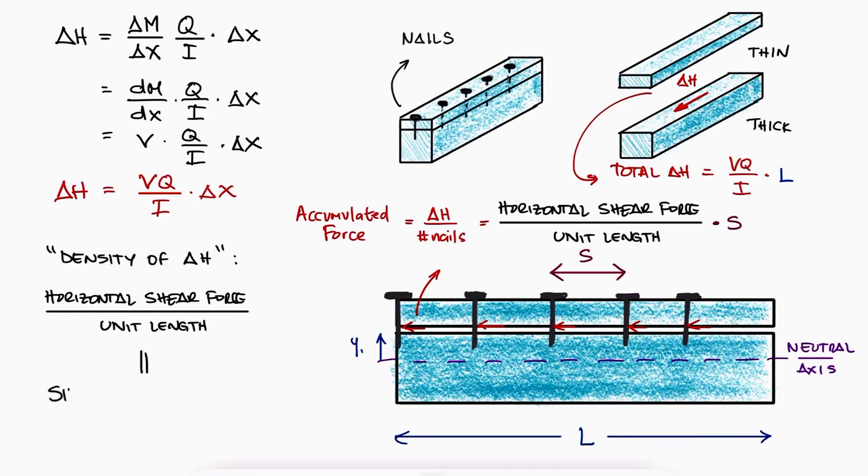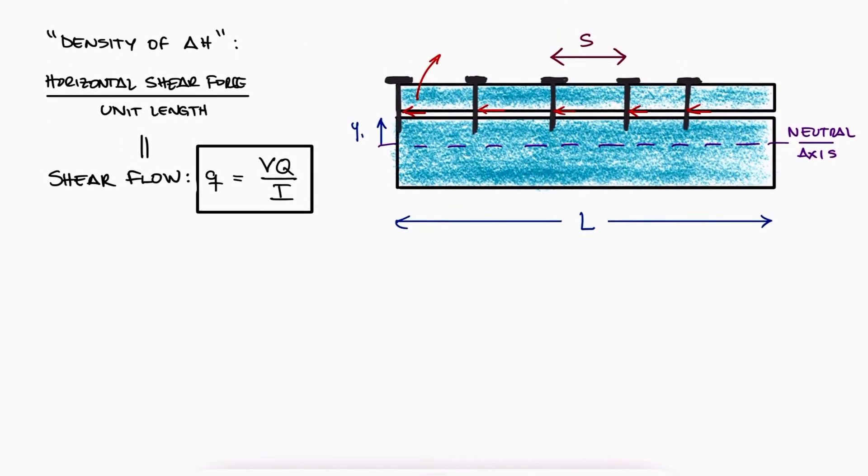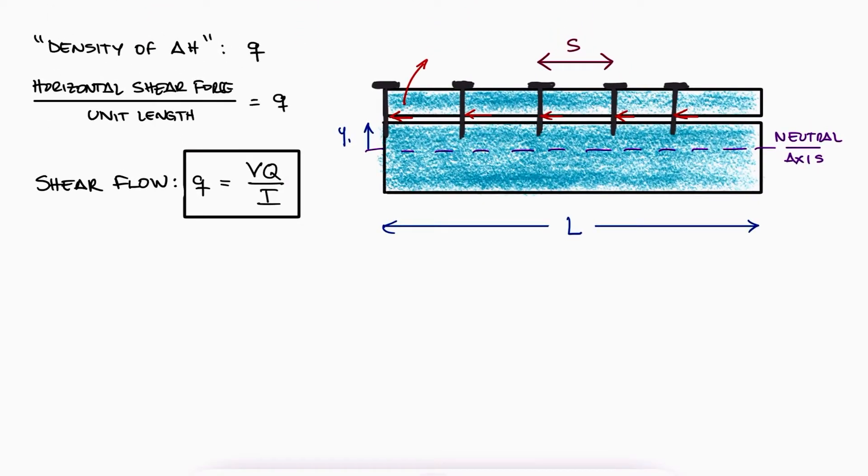This shear force density is what we defined as shear flow, lowercase q, the horizontal shear force per unit length. The reason I say sort of accumulated force is because as long as you don't have anything to counteract the shear force delta H, delta H keeps increasing. If we start at one end of the beam and move along the x-axis to a certain point, the delta H is the shear flow times that distance x.